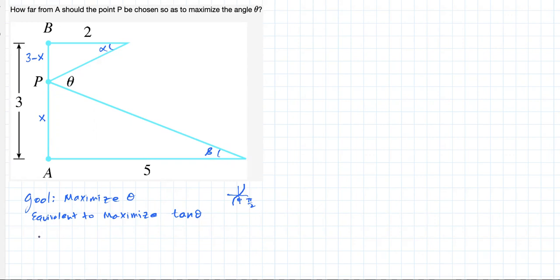So now, tangent of theta can be expressed as follows. Notice, if I draw this parallel line to the base here, this is clearly alpha, this is clearly beta. So theta can be written as alpha plus beta. Therefore, tangent of theta should be tangent of alpha plus tangent of beta, all divided by 1 minus tangent of alpha multiplied by tangent of beta.